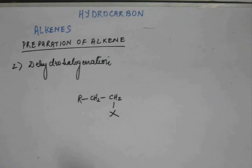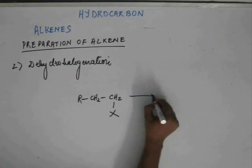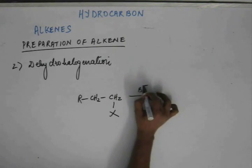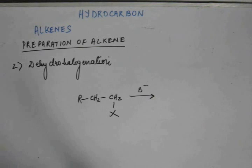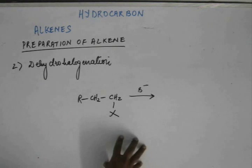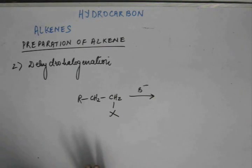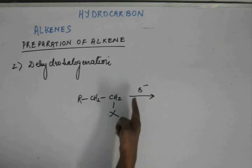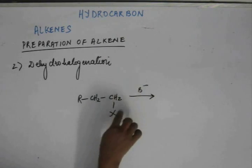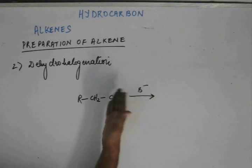Suppose this is a substrate — it's an alkyl halide — and I have added a base. Now, base and nucleophile are different, and we had a detailed discussion on the difference before. If you missed that, go back to the lecture, study the difference between base and nucleophile, and come back. Since I have written B minus, it's a base, and this base will not substitute the halogen, so there will be no SN2 reaction.